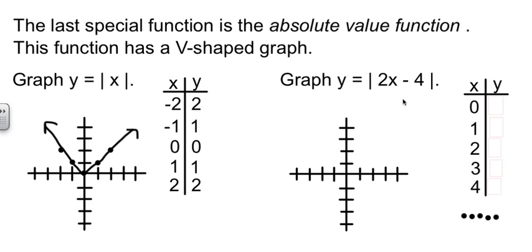Now we're ready to just plug in. x equals 0. 2 times 0 is 0. Minus 4 is negative 4. The absolute value of that is 4. 2 times 1 is 2. Minus 4 is negative 2. The absolute value of that is 2. 2 we said earlier. 2 times 2 is 4. Minus 4 is 0. 3, we get 2 times 3 is 6. Minus 4 is 2. And the absolute value of that is 2. And it shouldn't surprise too many of you to see that 4 gives us 4.